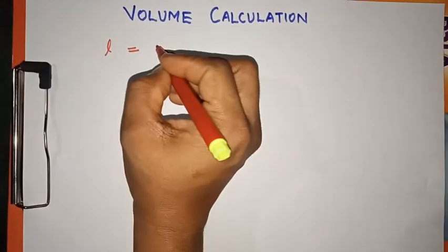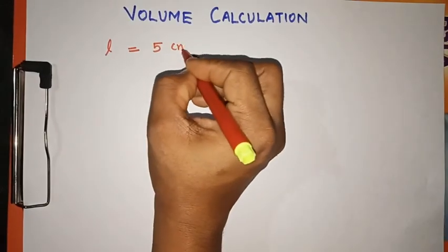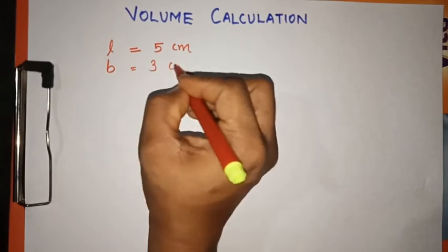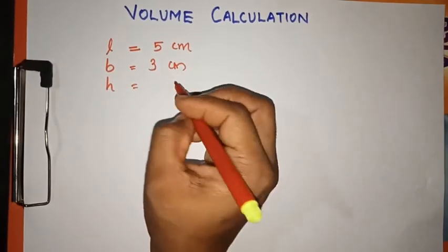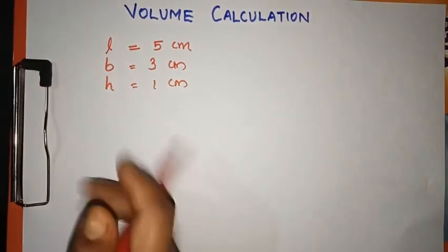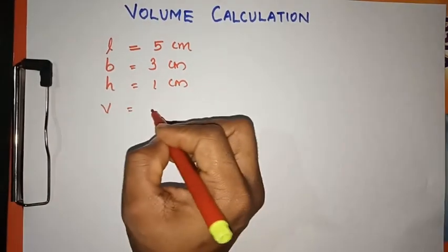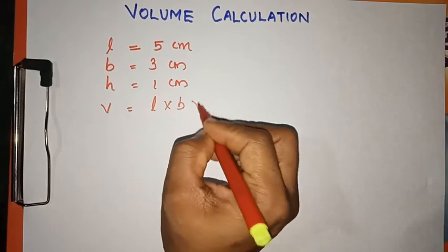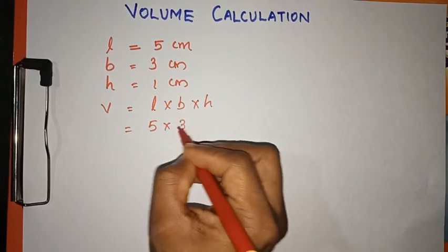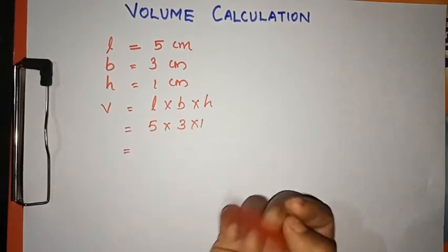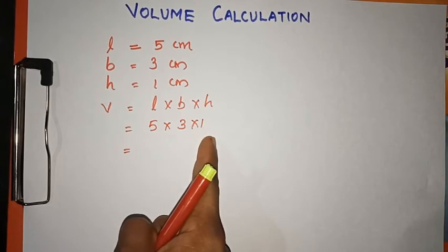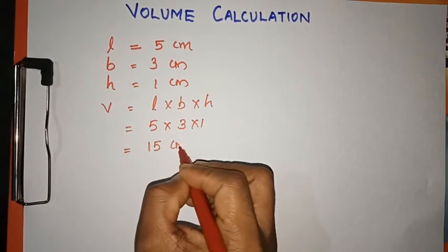The length is 5 cm, the breadth is 3 cm, and the height is 1 cm. Volume is equal to length × breadth × height, that is 5 × 3 × 1. So 5 × 3 = 15, and 15 × 1 = 15. The volume is 15 cm³.